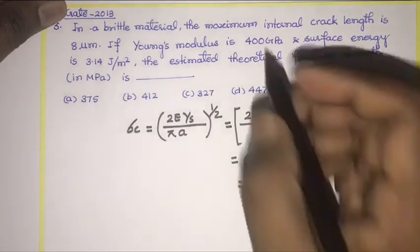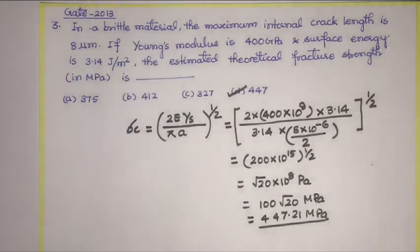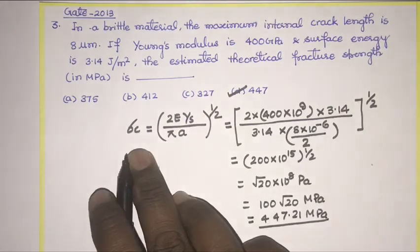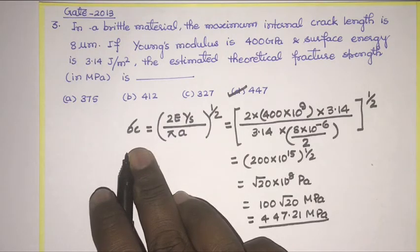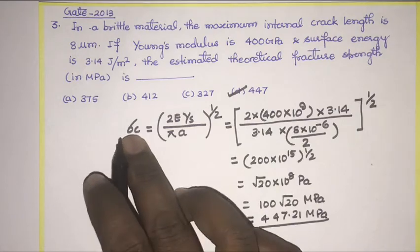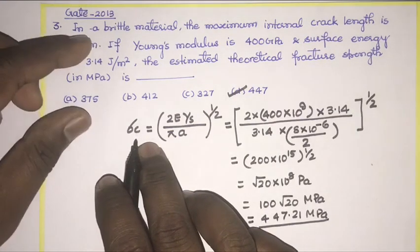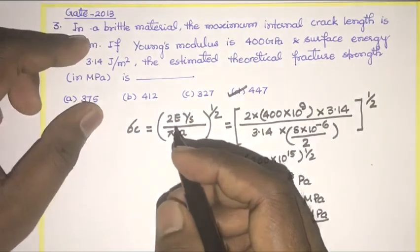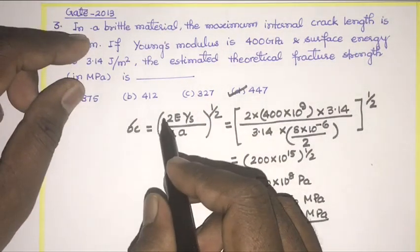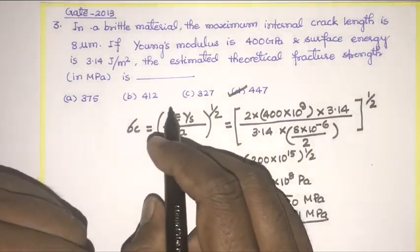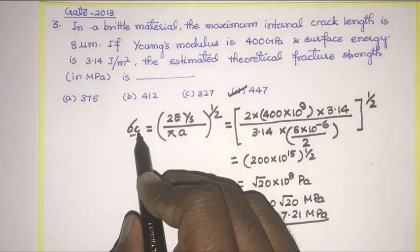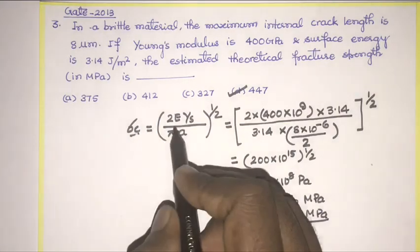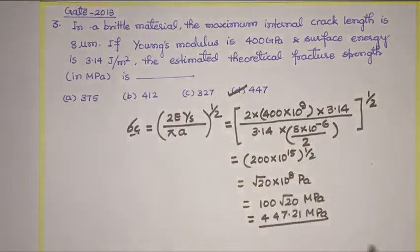So the correct option gives 447.21 megapascal. This is the critical stress required to cause fracture or the propagation of a crack in a brittle material. We know that brittle materials contain many small cracks and flaws. When the magnitude of the tensile stress at the tip of the crack exceeds the value of σc, the crack will propagate and cause fracture. That's the end of this lecture. Thank you very much.